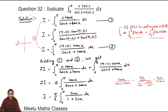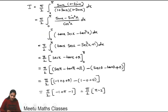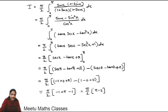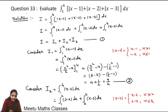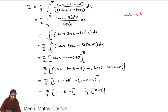So the function sinx/(1+sinx) is simple to integrate by rationalization. We multiply and divide by (1−sinx), giving (sinx − sin²x)/(1 − sin²x). Since 1 − sin²x = cos²x, the denominator becomes cos²x.